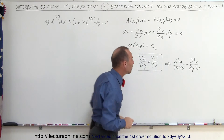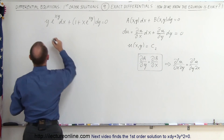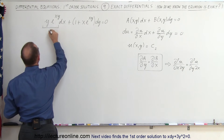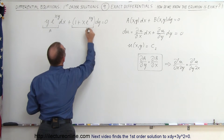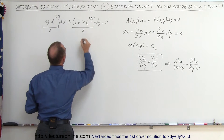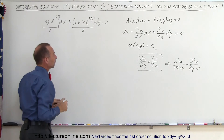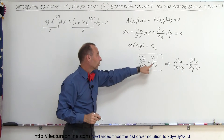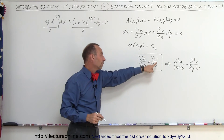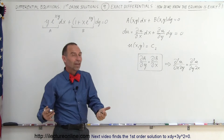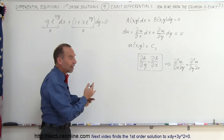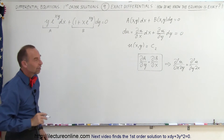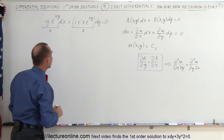So if this is an exact differential equation, then this will be true. The way we can find that is to recognize that this here is equal to a, and this here is equal to b. What we're going to do is take the partial of a with respect to y, take the partial of b with respect to x, and if they're the same, it's an exact differential equation. If they're not the same, it's not an exact differential equation.